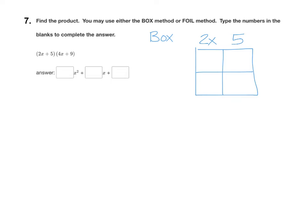And then put the other binomial on the side of the box. So 4x plus 9 here. And now once you get your box set up, you just multiply the sides of the box. So in this first square, you're going to take 4x times 2x.